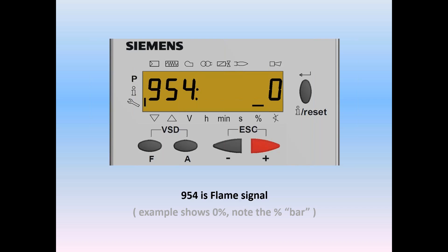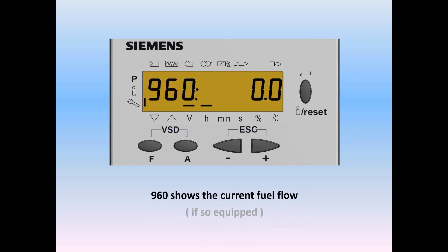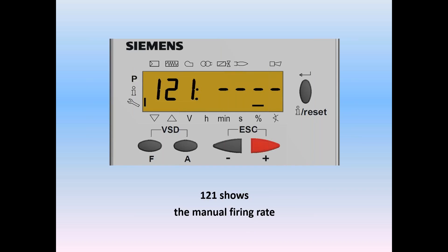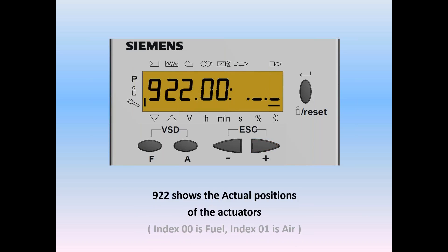Push the plus key to move on, and now we get parameter 960, which shows the current fuel flow — in this case 0. Do a plus to move to the next screen: parameter 121, which shows the manual firing rate — in this case we don't have one. Do the plus key and we move on to 922, which shows the actual positions of the actuator. This parameter has indexes: 0,0 is fuel and 0,1 is air.